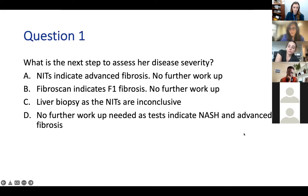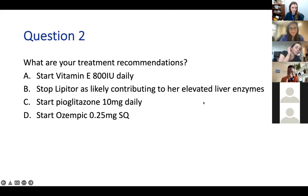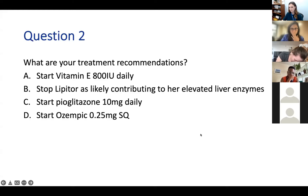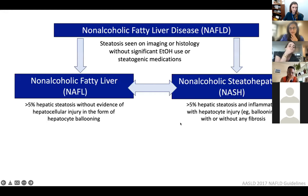This question is a tough one—participants are hedging. Treatment recommendation options: A—start vitamin E; B—stop the Lipitor since it's probably contributing to elevated liver tests; C—start pioglitazone 10 milligrams; or D—start semaglutide 0.25 milligrams sub-Q. Some respondents chose A, one chose C. By the end of the talk you will know the answers.